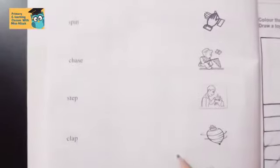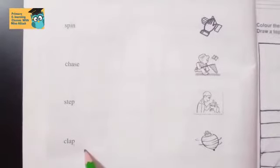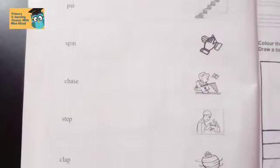For example, here we have a word: clap. We have to read the words. Now you have to match the word with the correct picture. What does that mean? We have to match these two words.